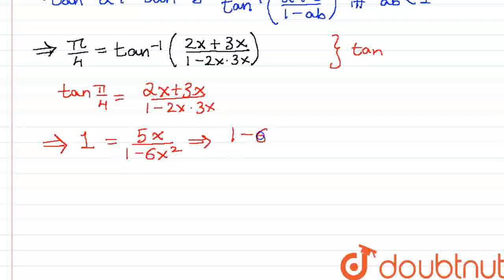Which means that 1 minus 6x squared is equal to 5x. Cross multiplying and taking everything to one side, 6x squared plus 5x minus 1 is equal to 0.